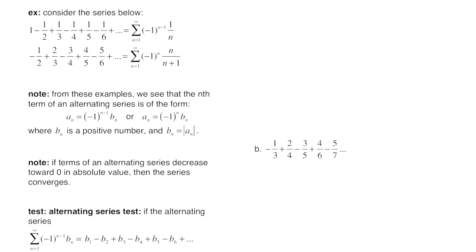Since this first term is negative and the sigma starts at n equals 1, we have negative 1 to the n. When you plug in 1, negative 1 to the 1 makes the first term negative. When you plug in 2, negative 1 squared is positive, so the second term is positive. In the numerator it goes 1, 2, 3, 4, 5, so that's just n. In the denominator, to get from n equals 1 to 2 or 2 to 3, you're taking n and adding 1, so that's n plus 1 in the denominator. From these examples, the nth term of an alternating series is of the form a sub n equals negative 1 to the n minus 1 times b sub n, or negative 1 to the n times b sub n, where b sub n is the formula without the alternating part.